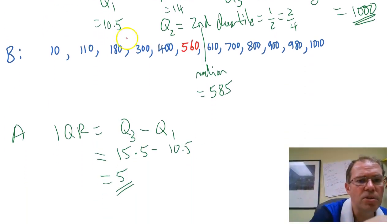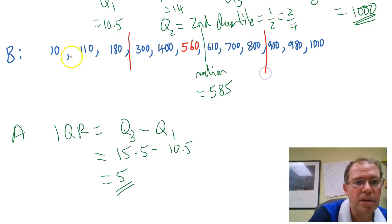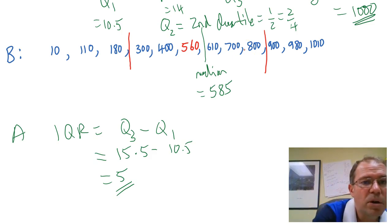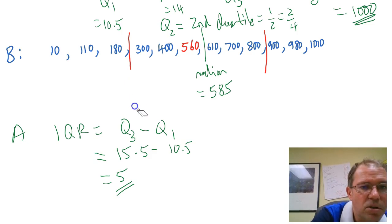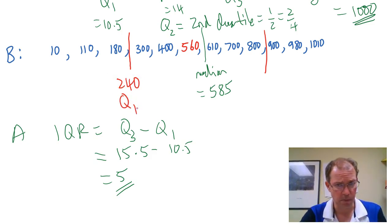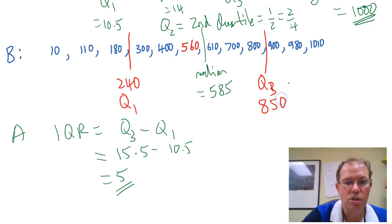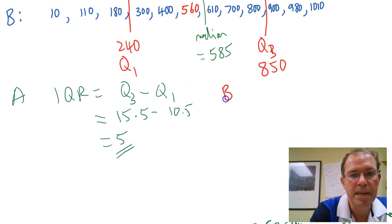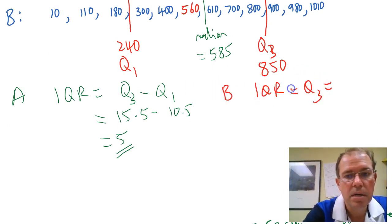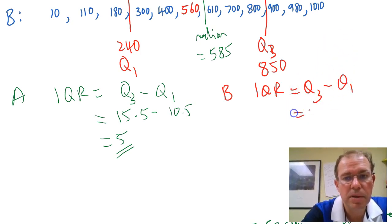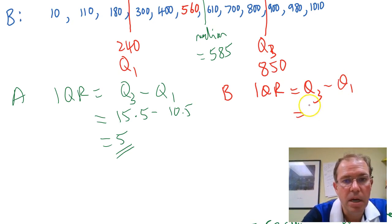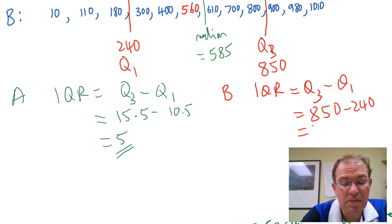Let's do it for the second set B. Again, we've got 12 numbers, so the quartiles split it into groups of three. Halfway between 180 and 300 — the distance is 120, half of that is 60, so the first quartile would be 240. And the third quartile would be halfway between 800 and 900, so that's 850. For set B, the IQR is Q3 minus Q1, so the interquartile range would be 850 minus 240, and that gives us 610.